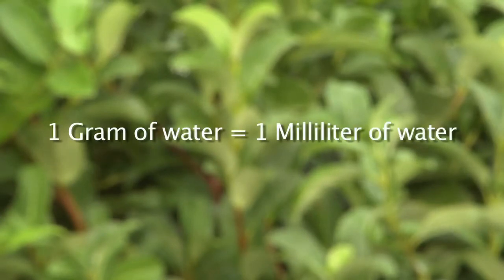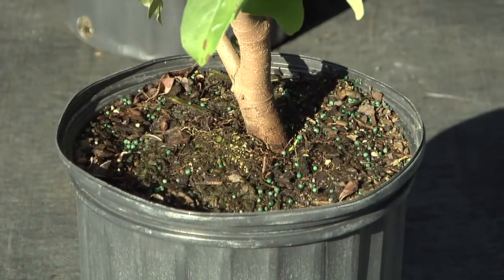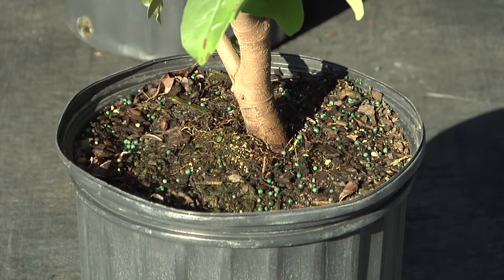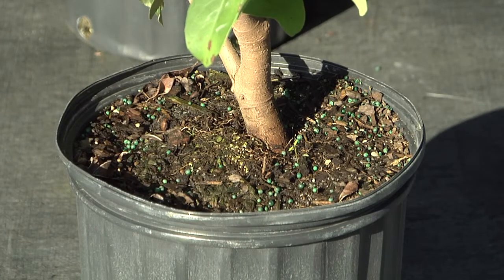This weight can be converted to volume because one gram of water equals one milliliter of water. Plant available water is usually expressed as a percent of container substrate volume.